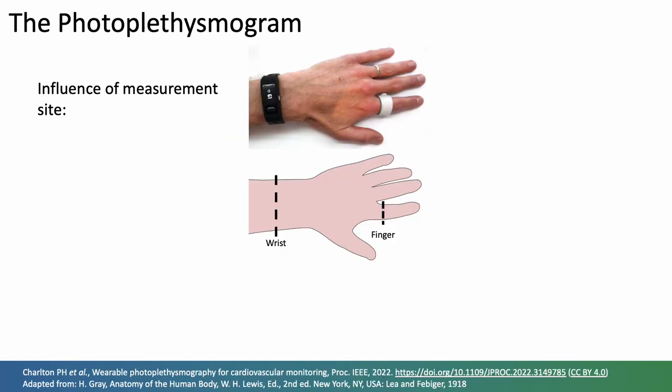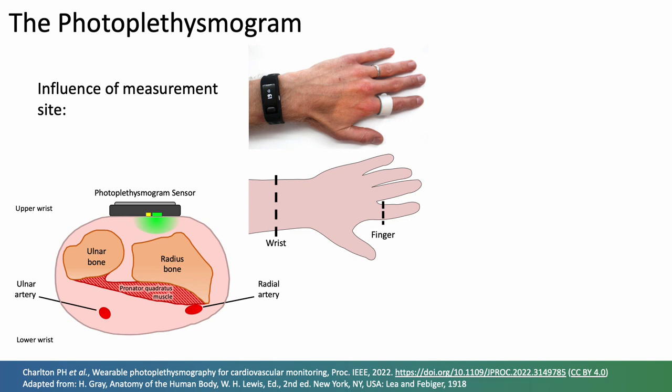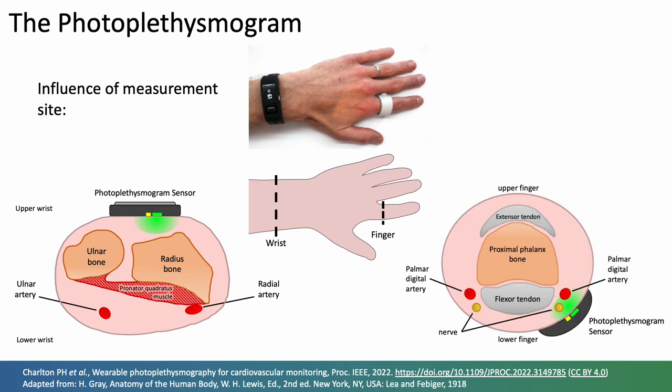The shape of the pulse wave varies between different measurement sites, so for instance comparing the wrist to the finger. Here is a cross section through the wrist where it's clear that a sensor mounted on the upper side of the wrist is situated a long way from the major arteries on the lower side of the wrist, so it probably primarily measures microvascular blood flow, whereas a sensor at the finger can be mounted very close to the main arteries of the finger, so it could be influenced more strongly by arterial blood flow.